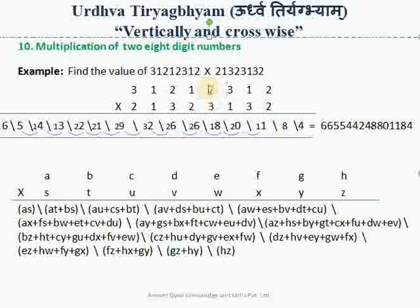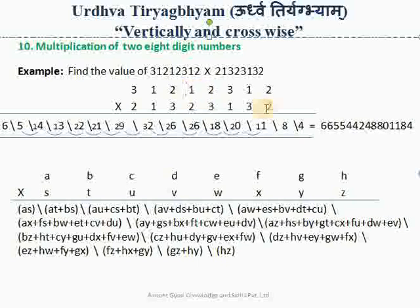In the next step, we multiply four columns: 2 into 2 = 4, 3 into 2 = 6, 4 plus 6 = 10, plus 3 into 3 = 9, giving 19, plus 1 into 1 = 1, so we get 20 and write 20. In the fifth step, considering five columns: 1 into 2 = 2, plus 2 into 2 = 4, giving 6, plus 2 into 3 = 6, giving 12, plus 3 into 1 = 3, giving 15, plus 3 into 1 = 3, giving 18. So we write 18.